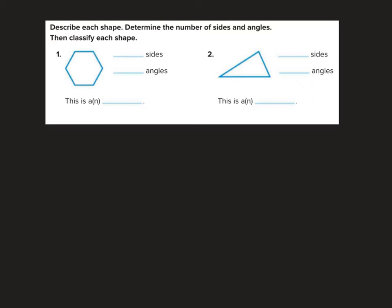This shape has one, two, three, four, five, six sides. One, two, three, four, five, six angles. And a shape with six sides and six angles is called a hexagon.